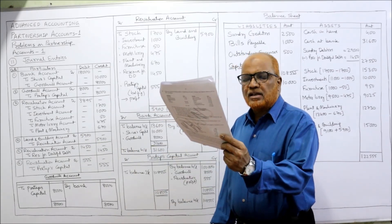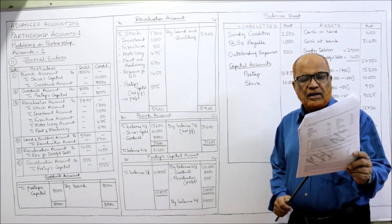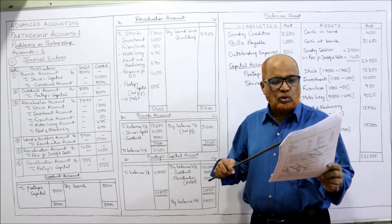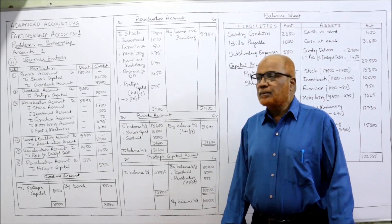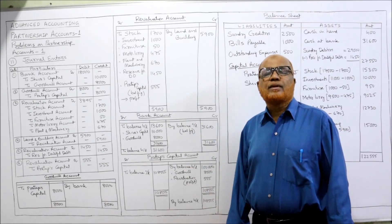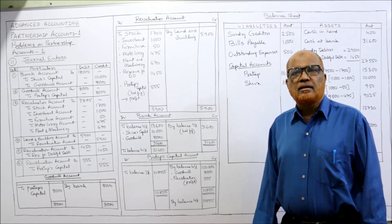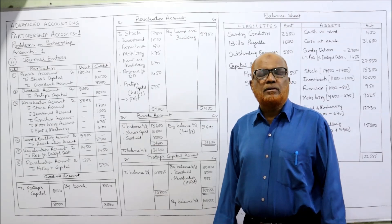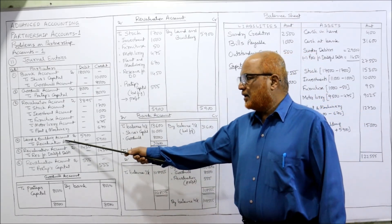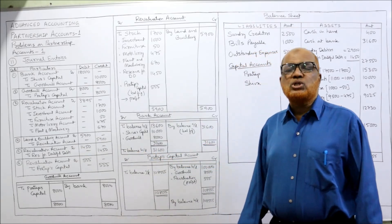One value has to be increased: land and building is to be brought to ₹15,000 from book value of ₹9,100 — an appreciation of ₹5,900. To increase an asset, debit the asset. Entry: Land and Building Account Debit ₹5,900 — To Revaluation Account ₹5,900 — being the value of land and building appreciated.